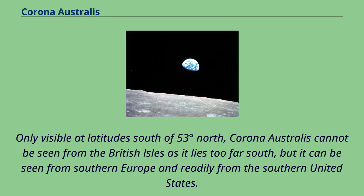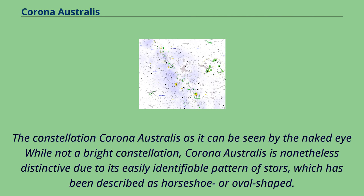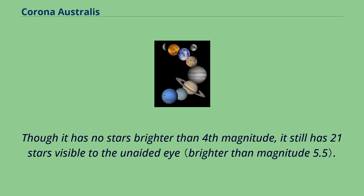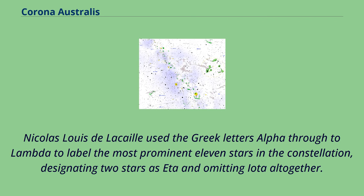The constellation Corona Australis as it can be seen by the naked eye — while not a bright constellation, it is nonetheless distinctive due to its easily identifiable pattern of stars, which has been described as horseshoe or oval-shaped. Though it has no stars brighter than fourth magnitude, it still has 21 stars visible to the unaided eye. Nicolas Louis de Lacaille used the Greek letters alpha through lambda to label the most prominent 11 stars in the constellation, designating two stars as eta and omitting iota altogether.